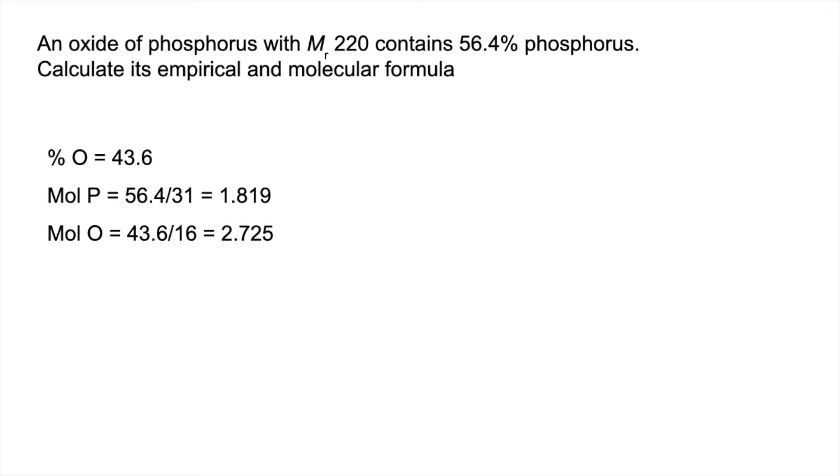We then work out the mole ratio by dividing by the smallest, so we get a 1 to 1.5 ratio. We can't round that 1.5 up to 2 - you can only do that if it's very close, within 0.1 effectively.